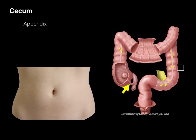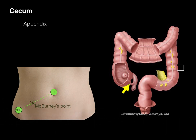To find the appendix in surface anatomy, we find first the anterior superior iliac spine, or ASIS, then the umbilicus, and we make an imaginary line between the two. About a third of the way up between the ASIS and the umbilicus is an imaginary point called McBurney's point — the surface landmark of where the appendix and the cecum have their junction.